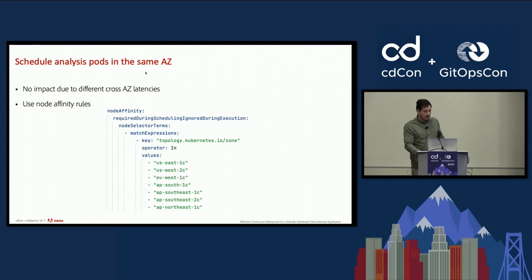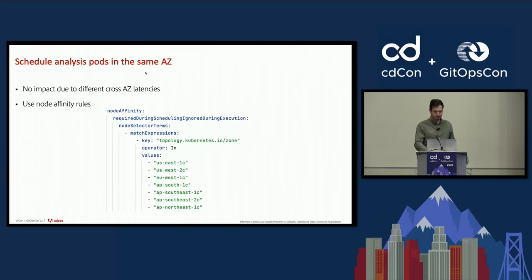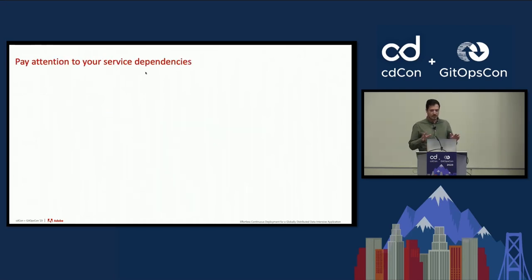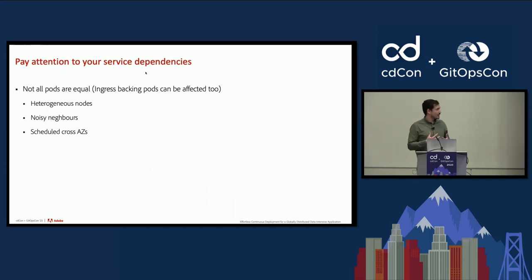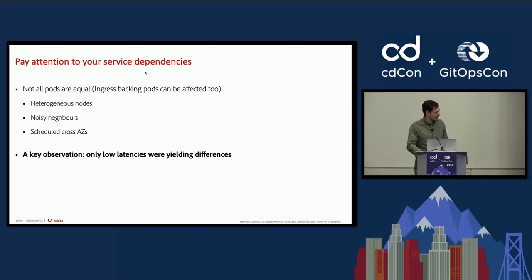Latency differences may also be observed if your analysis pods are scheduled across availability zones. To fix this, use affinity rules to schedule your pods in the same AZ. These infrastructure changes brought more stability, but didn't fully fix the issue. The pods your service communicates with are also impacted by these same issues, so you may get a difference in response latency even for the same service. We noticed the difference occurred only for low latency values while high latencies showed no differences.